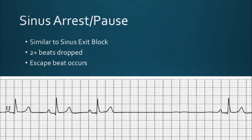In this example, let's march them out. You can see the end beat occurs a whole large box away — that will be your escape beat. You can see your two dropped beats: the QRS was supposed to be here, and here, and here. This is going to be your escape beat right here. So: drop, drop, escape beat.